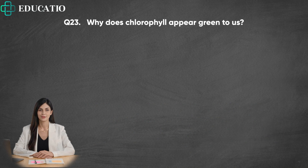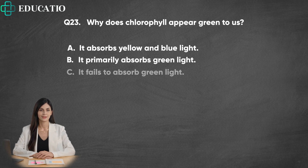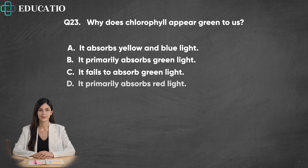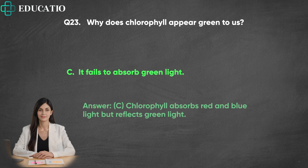Question 23. Why does chlorophyll appear green to us? A. It absorbs yellow and blue light. B. It primarily absorbs green light. C. It fails to absorb green light. D. It primarily absorbs red light. Answer: C. Chlorophyll absorbs red and blue light but reflects green light.